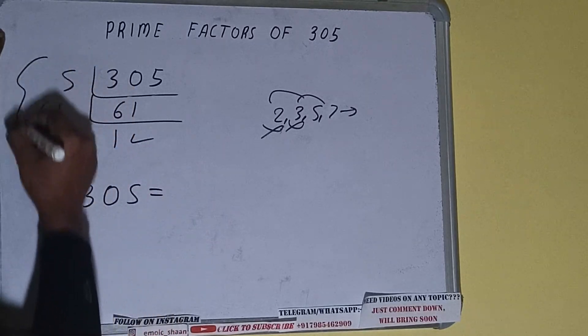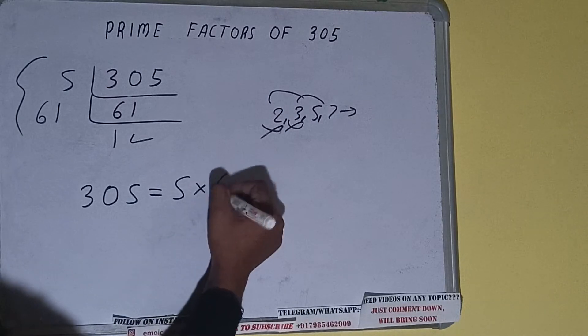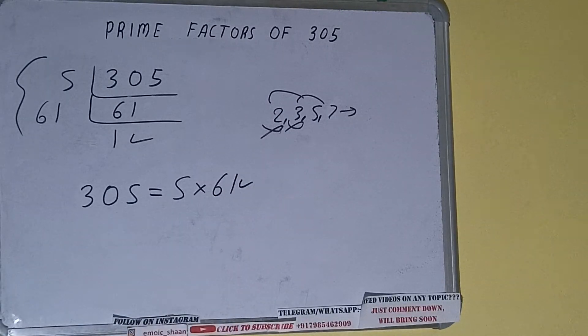That is, prime factors of 305 equals multiply whatever we have on the left-hand side, that is 5 times 61. That will be the answer. So this is all about prime factors of the number 305.